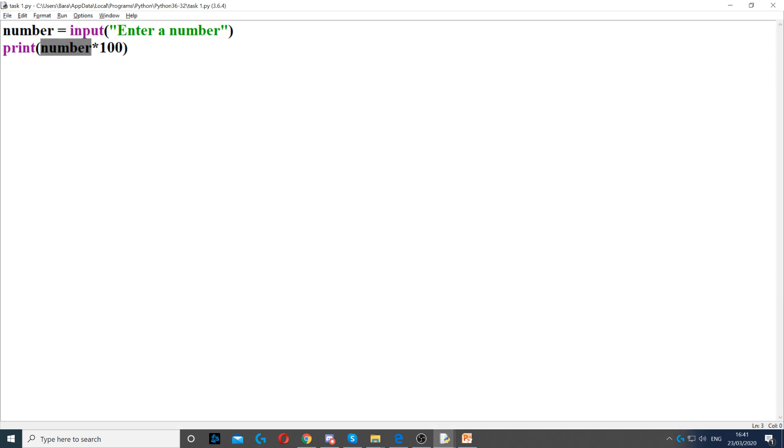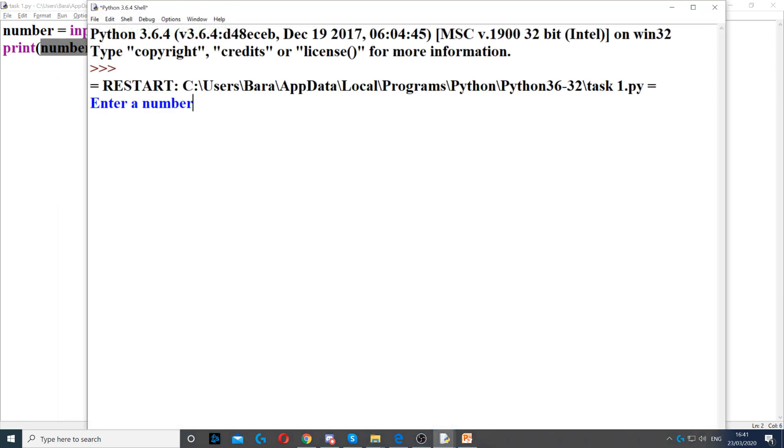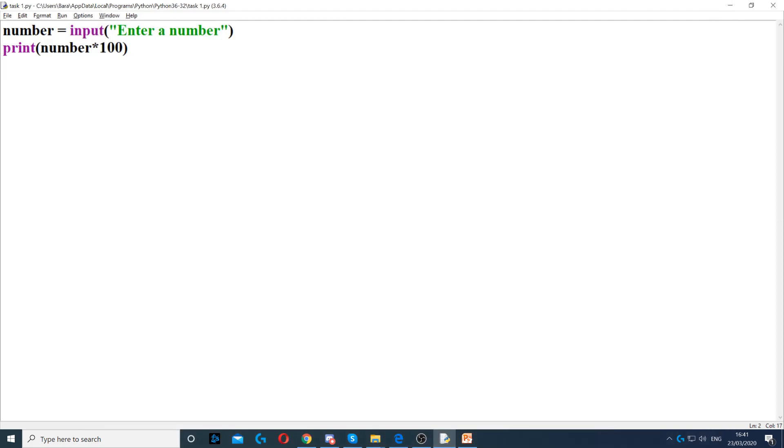But if I run it, you will see that it typed 500 times. Now this is because it counts number as a string. So it's like typing the letter A, for example, or hello - it just does hello 100 times. Now this is because Python automatically assumes the input is a string unless you tell it otherwise.